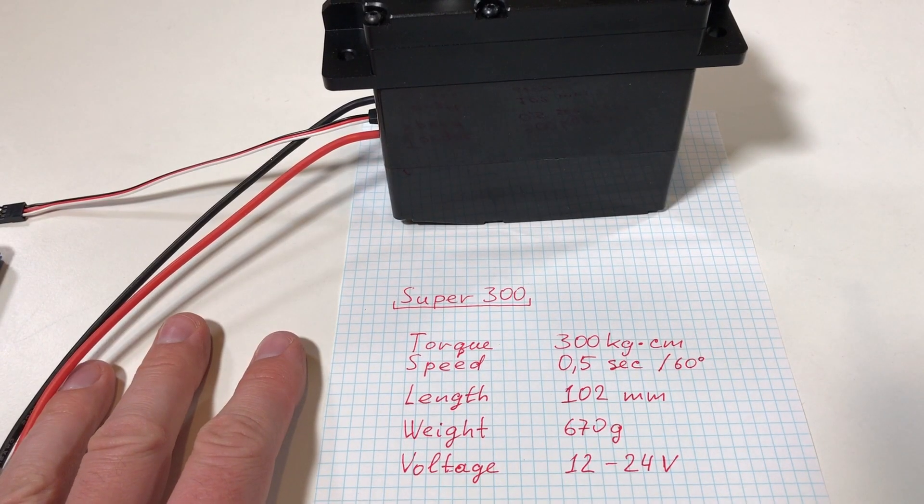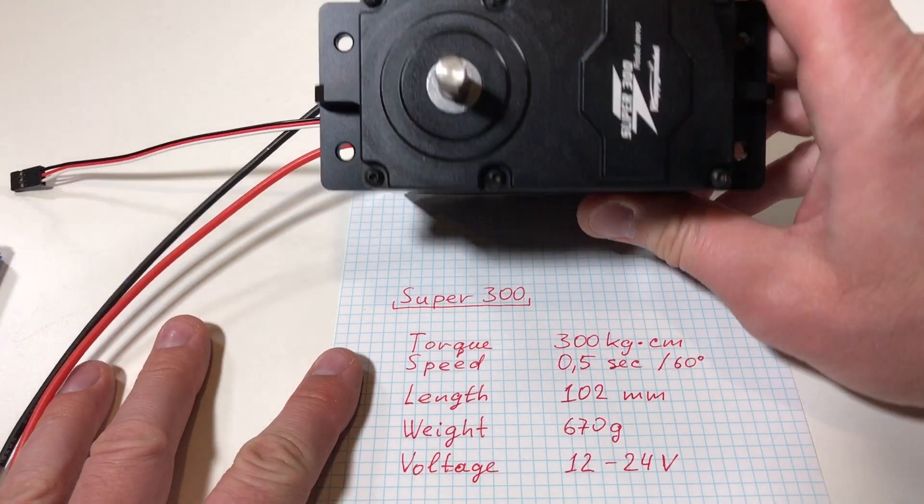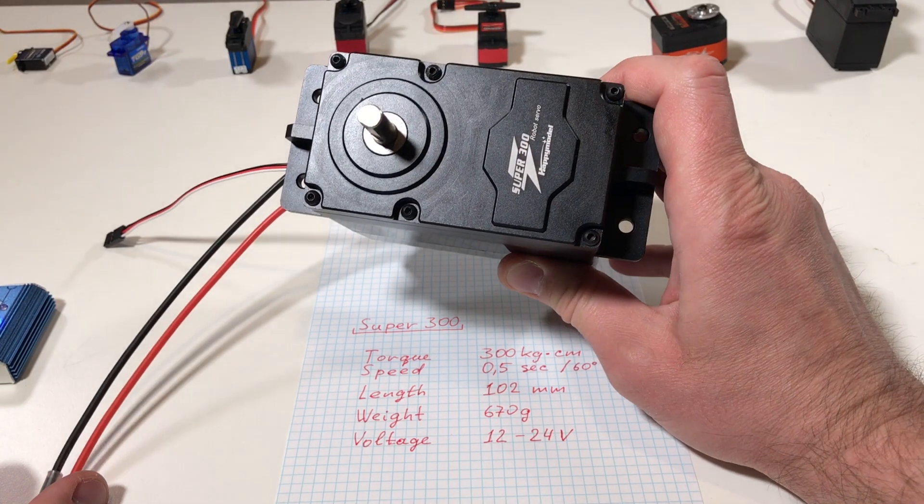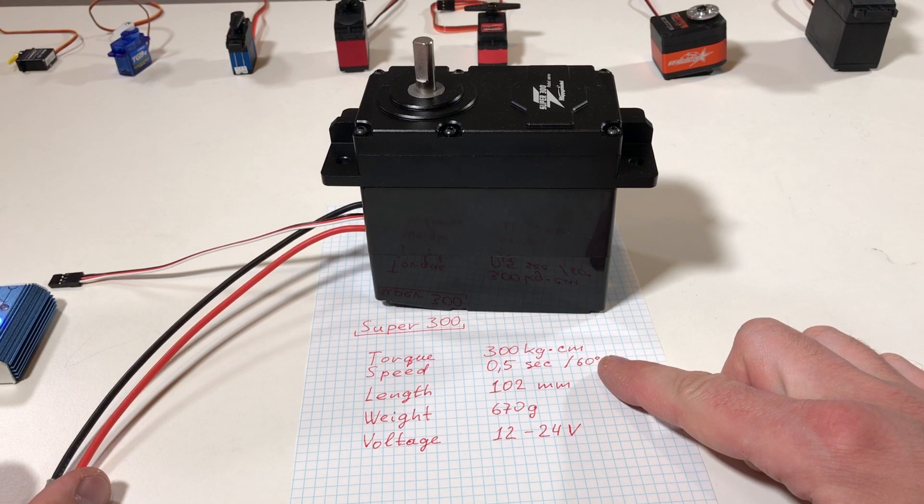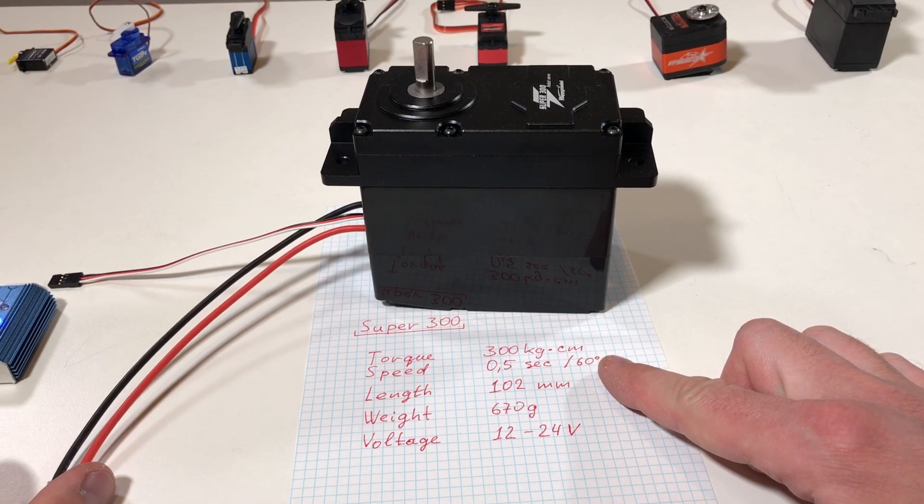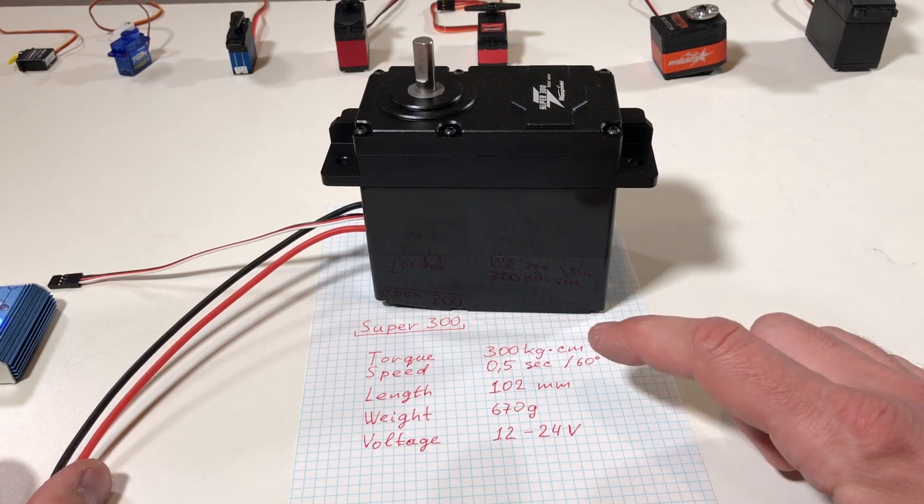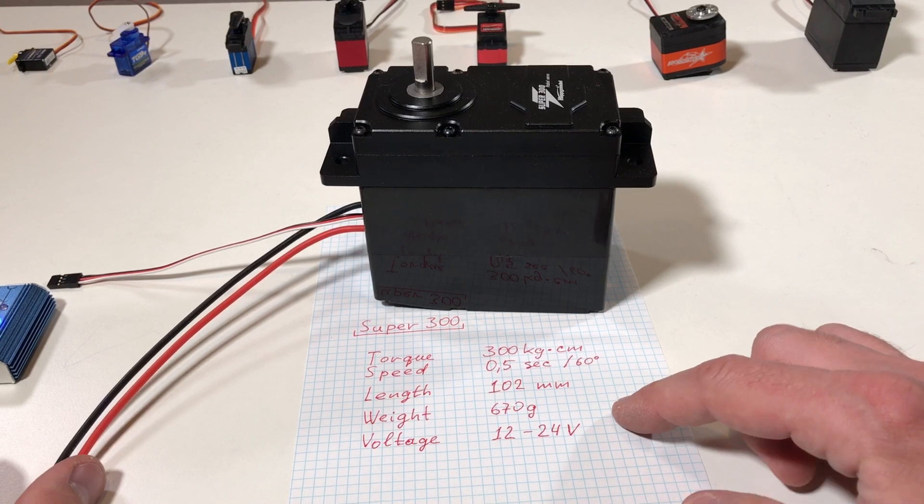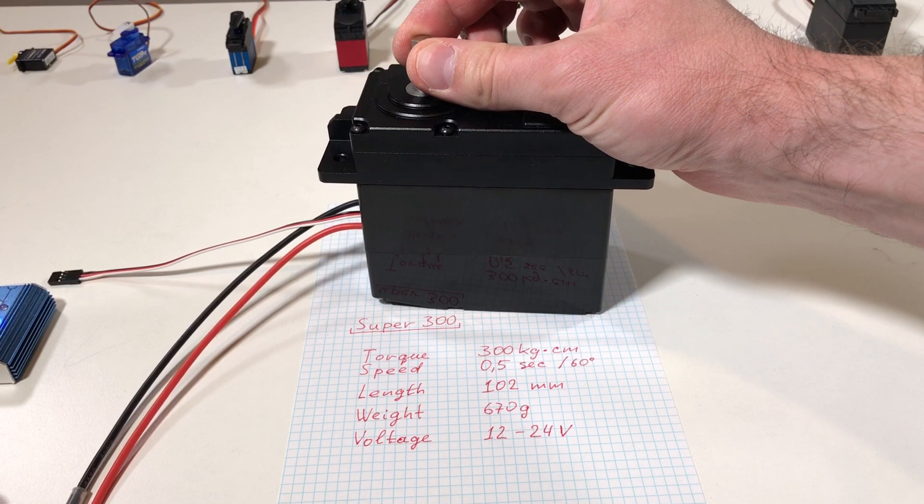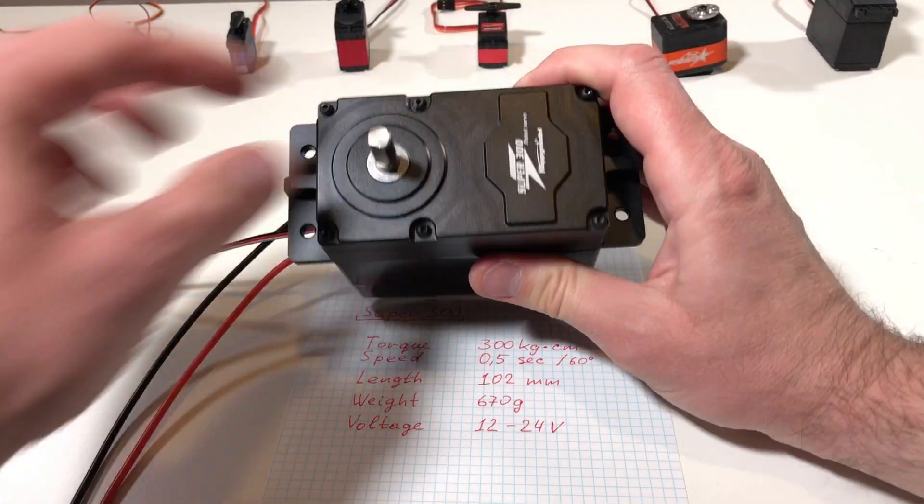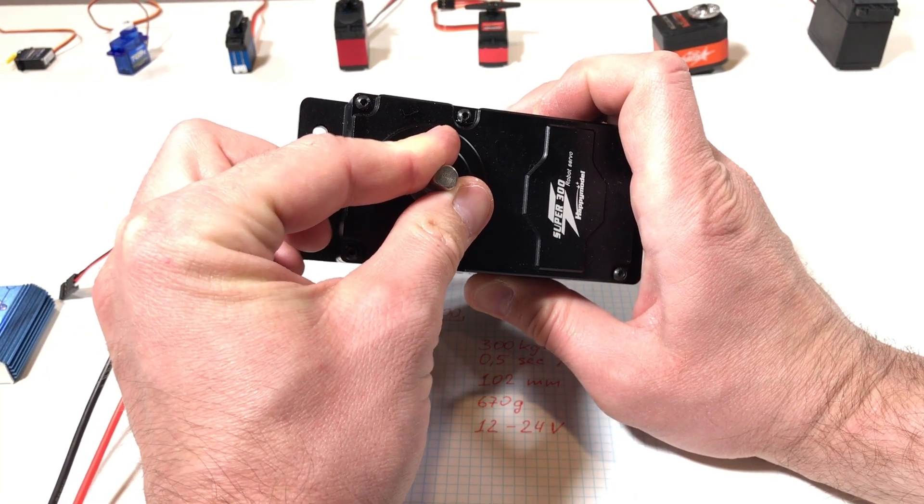Now the most interesting servo among all of these is this huge super servo. It doesn't even fit in my camera. The name of this servo is Super 300, and why? Because it has 300 kilogram per centimeter, which means 3 kilogram per meter torque. This is really cool, this is the torque which I wanted to use for my robot arm. The only obvious problem which I can see now is that this servo has quite significant backlash. Maybe it's difficult to see it, but you can definitely hear it.